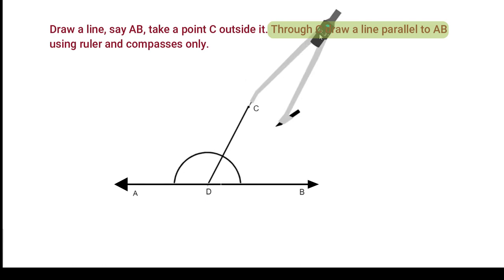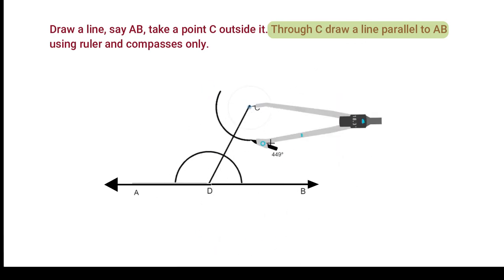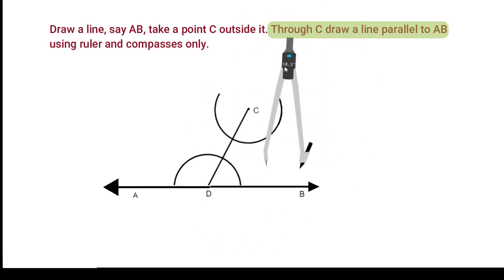Without changing the compass width, place compass on C and draw an arc. Now, measure the length of this arc and with the same length, draw an arc here.